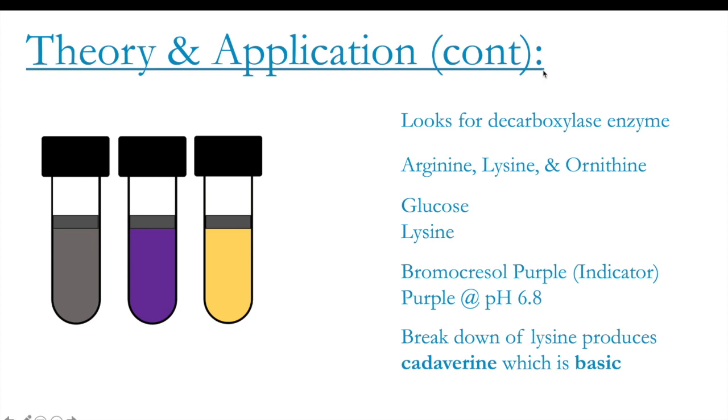As I mentioned earlier, this test looks for the decarboxylase enzyme or the ability to produce it. The thing with the decarboxylase test is that there are a lot of different amino acids out there. But the three most popular amino acids that tend to be used for our purposes of identifying bacteria is arginine, lysine, and ornithine, with lysine being the one used to demonstrate the experiment that we're working on currently.